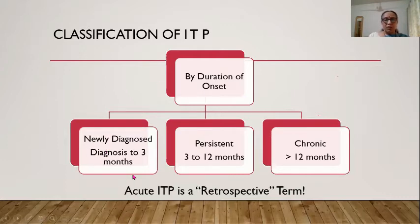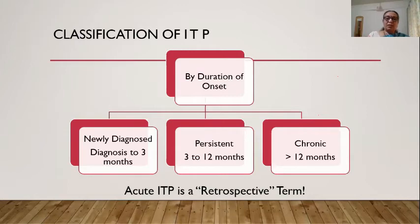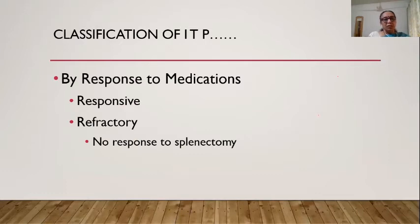ITP is classified by duration: newly diagnosed (diagnosis to 3 months), persistent (3–12 months), and chronic (more than 12 months). You cannot call it 'acute ITP' at presentation — that is a retrospective term. At the time of diagnosis, you only know it is newly diagnosed and cannot predict whether it will become persistent or chronic.